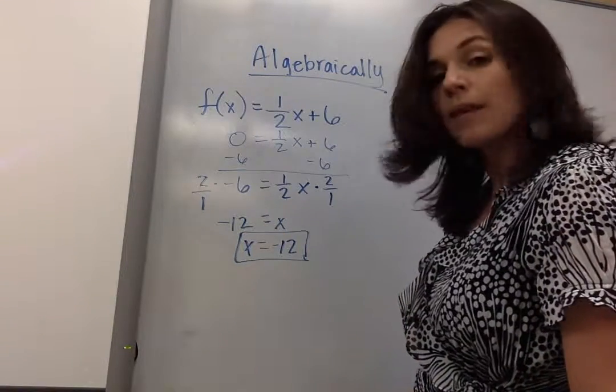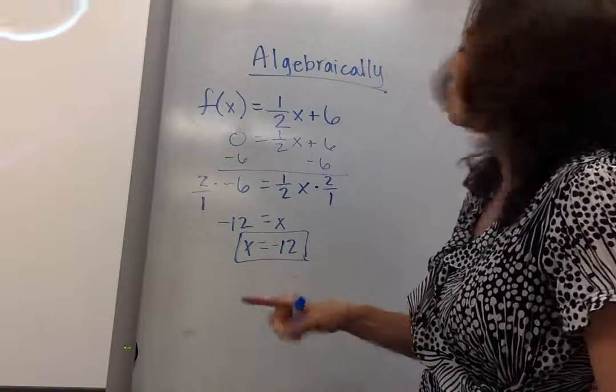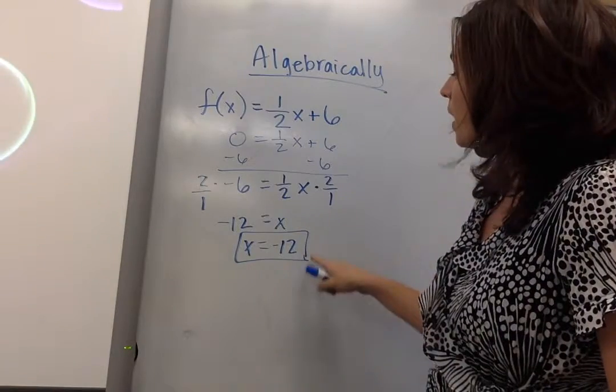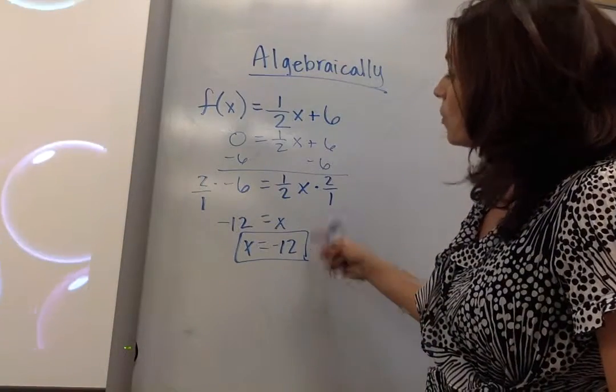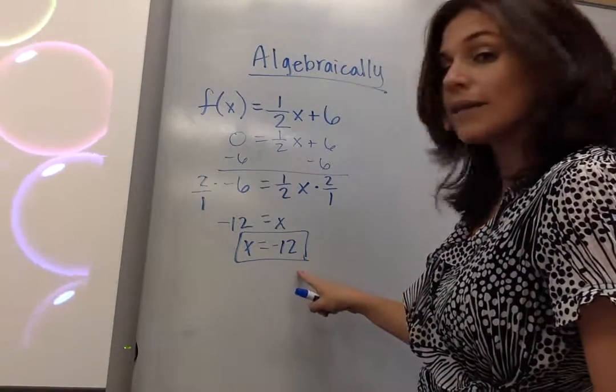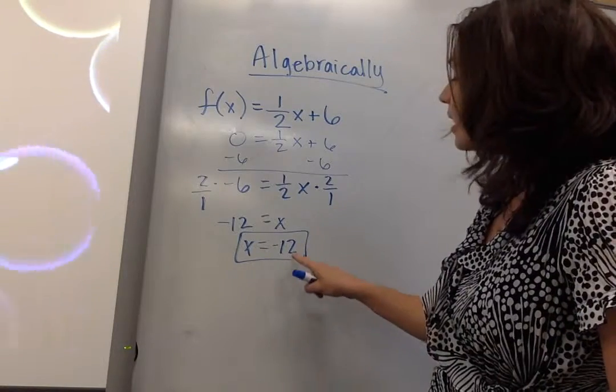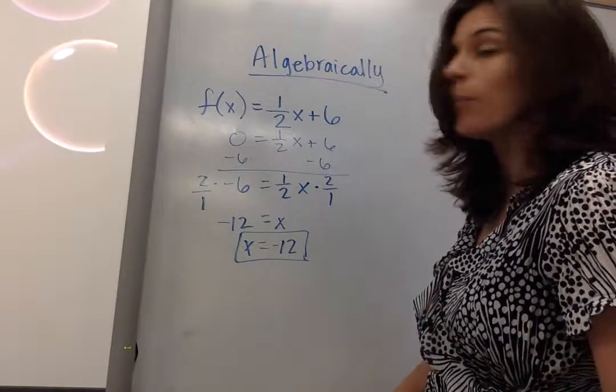I apply the symmetric property to get x equals negative 12, and that's my answer. I have one solution to this example: x equals negative 12. So where does it cross the x-axis? It crosses at negative 12. Let's try one more.